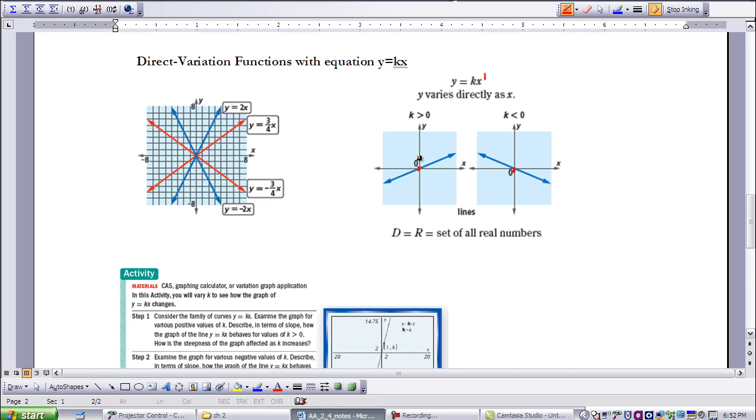When the value for k is greater than 0, it has a positive slope, or it moves upwards from left to right. When our slope is less than 0, we say it has a negative slope, and it moves upwards from right to left.